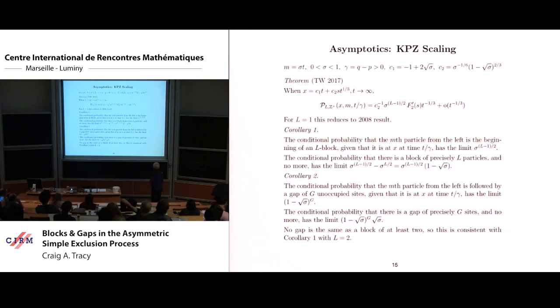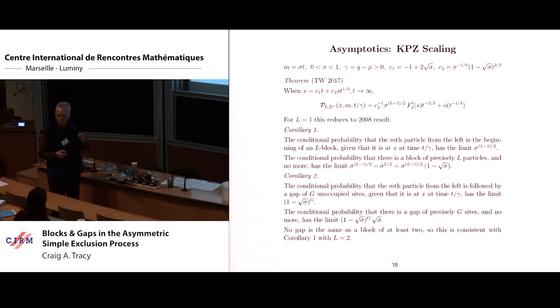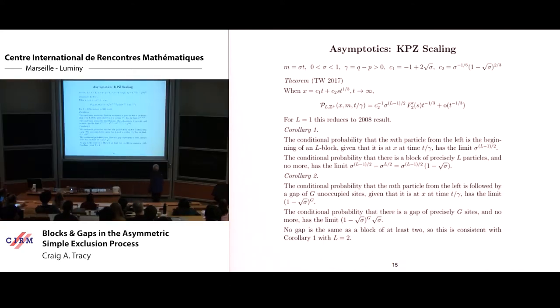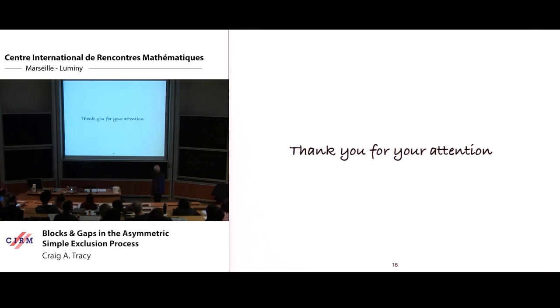For general L, we're looking at a density. We find the conditional probability that the nth particle from the left is the beginning of an L block, given that it is at X at time T over γ, has the limit σ^(L-1) over T. What that means is you condition that the nth particle is at X, and then you ask what's the probability that I have a block of length L. It's a Bernoulli process with parameter square root of σ. So you just put down the square root of σ and you get it. So the system's a Bernoulli process. All of that analysis led to just this simple factor at the end.